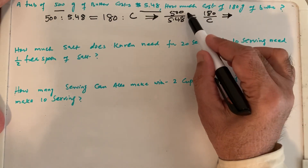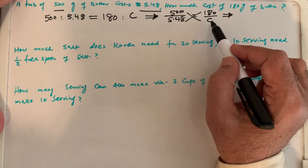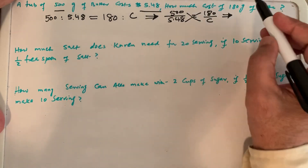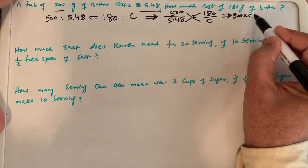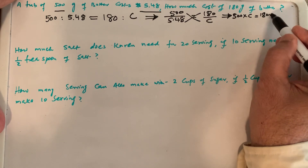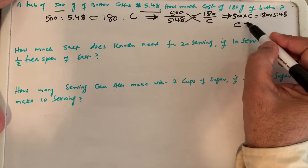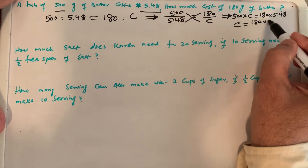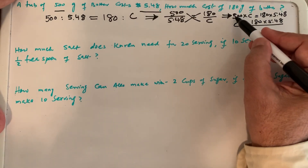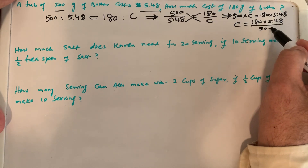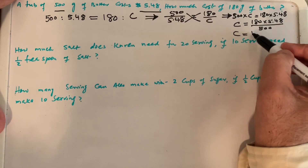The next step is to make it linear, and to make it linear we cross-multiply. The numerator of the left-hand side multiplies with the denominator of the right-hand side and vice versa. So we get 500 times C equals 180 times 5.48. We want to calculate C, and since 500 is multiplying with C, we shift it to the other side where it sits in the denominator. So the new cost comes out as $1.97.